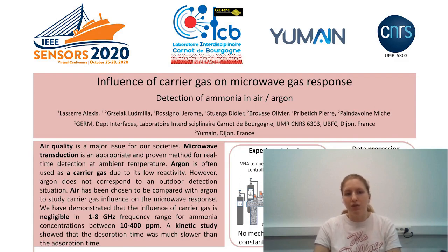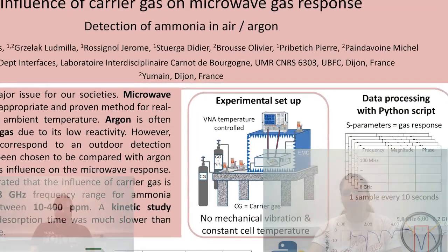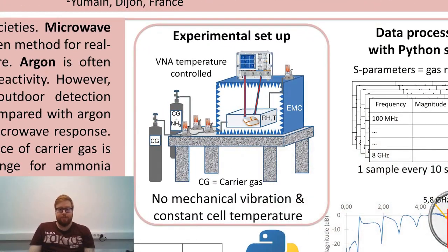The experiments were conducted in a frequency range from 1 to 8 GHz and ammonia concentrations went from 10 to 400 ppm. The experimental setup is composed of a hermetic glass cell placed in an anechoic chamber, several mass flow controllers to manage the gas flows, and a vector network analyzer which performs the measurements.